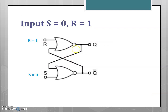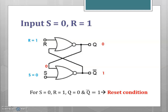For the next case, S equal to 0 and R equal to 1: for a NOR gate with one input equal to 1, the output is directly equal to 0. This 0 is fed back to the bottom NOR gate, so for 00 as input the output is equal to 1. Therefore for S=0 and R=1, the output Q is 0 and Q-bar equals 1. Since Q is 0, it represents the reset condition.